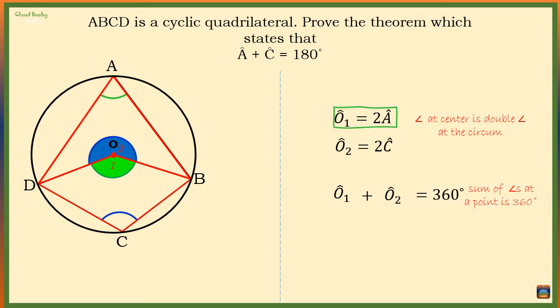But O1 is two times angle A and O2 is double angle C. Adding these two, we should get 360 degrees. So we have 2A + 2C = 360 degrees.